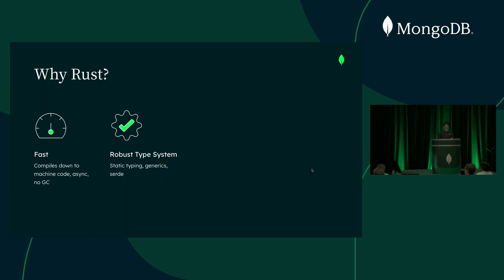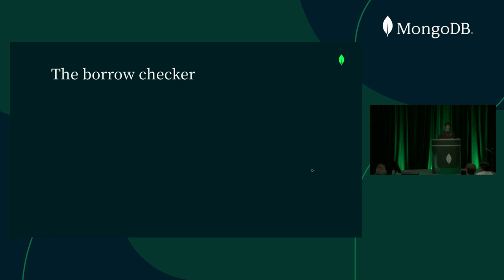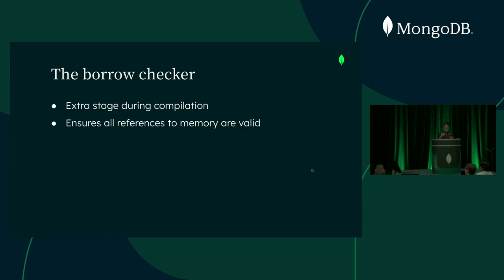We've talked a lot about how the driver uses the type system to make working with your data really easy. But now I want to talk about another very special part of Rust which helps ensure your data is memory safe — and that is the BorrowChecker. In Rust, you'll often find yourself having to pass around references to things. A large motivation for this is performance — it's much quicker to pass a reference to something than to make a copy of that data. But because we manually manage our memory in Rust, we can sometimes create or use an invalid reference. That's where the BorrowChecker comes in — it's an extra stage during compilation that exists to make sure all the references in your program are valid. If it detects any that are invalid, it will fail compilation.